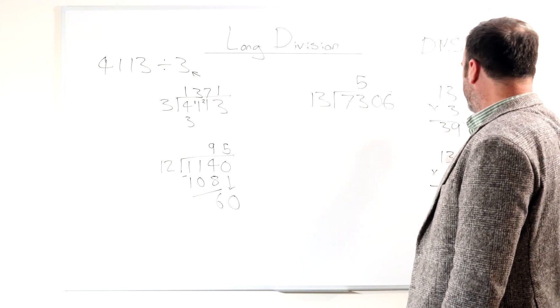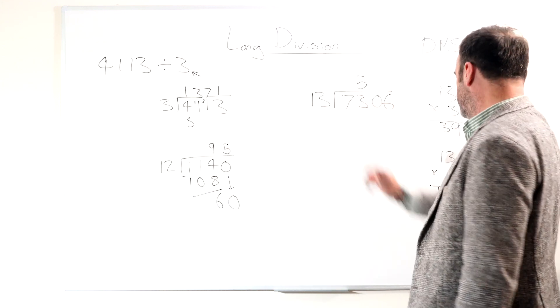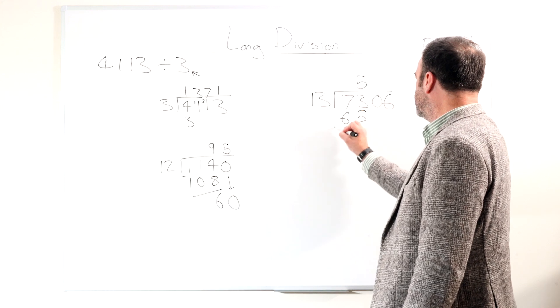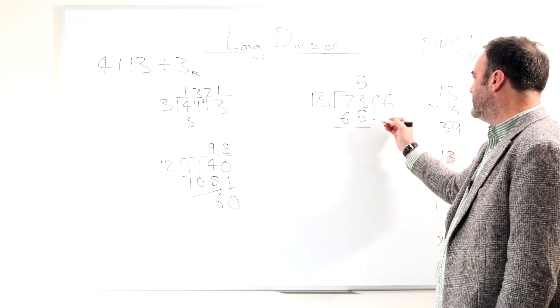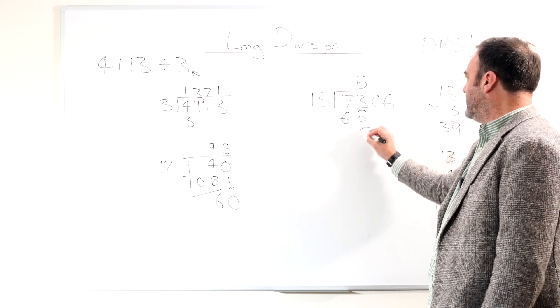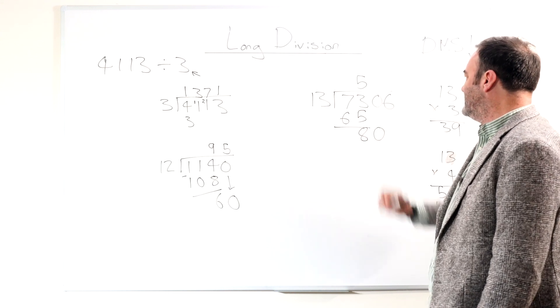So we've done the divide bit. Now we do the multiply bit. So 5 times that is 65. Remember, we're laying it out like this. Then we do a subtraction. What's the difference between what we've got and what it should be? 8, drop this down, is 80.